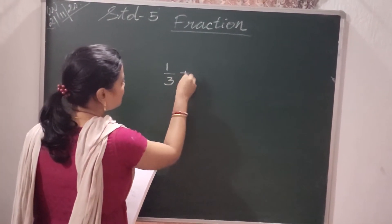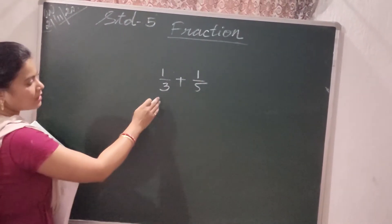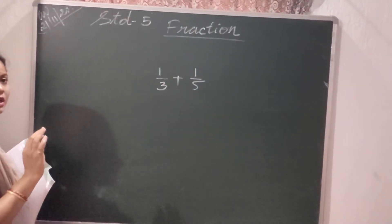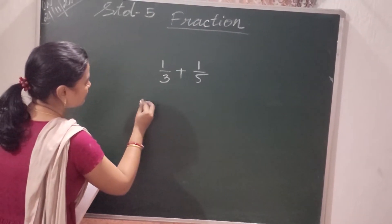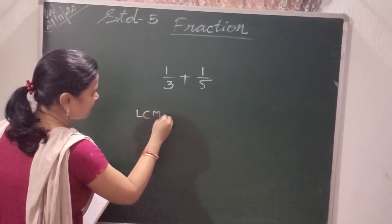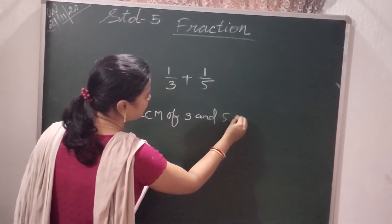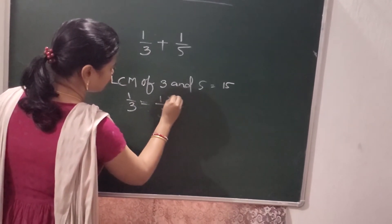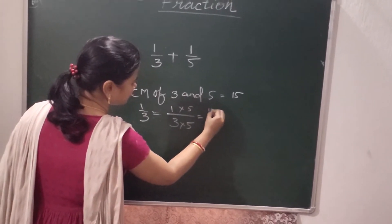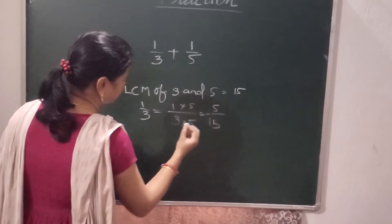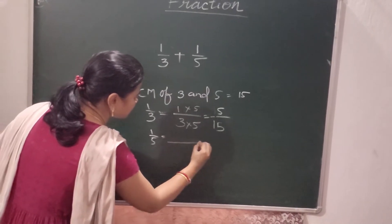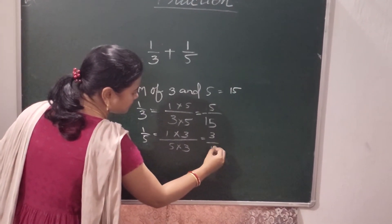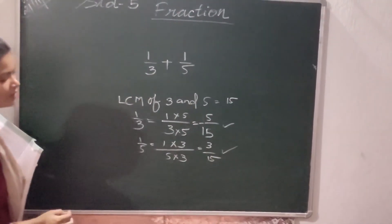Another example: 1 by 3 plus 1 by 5. Here the denominators are not the same. In this case we need to find the equivalent fraction of each fraction with equal denominators. Now these become like fractions.